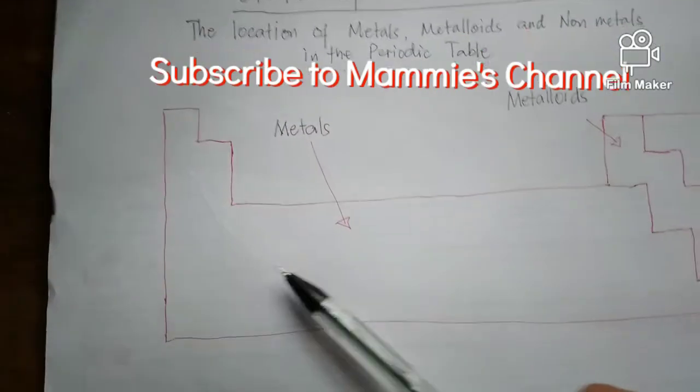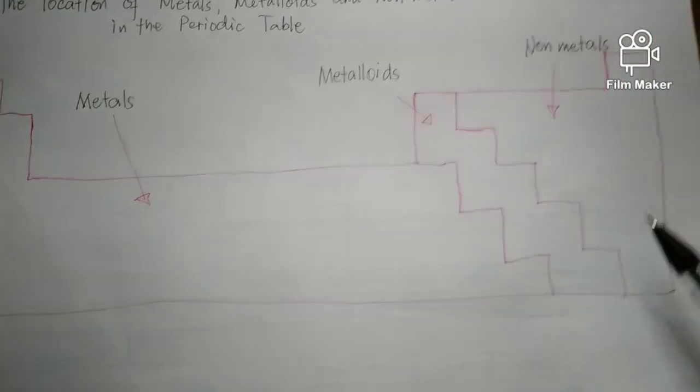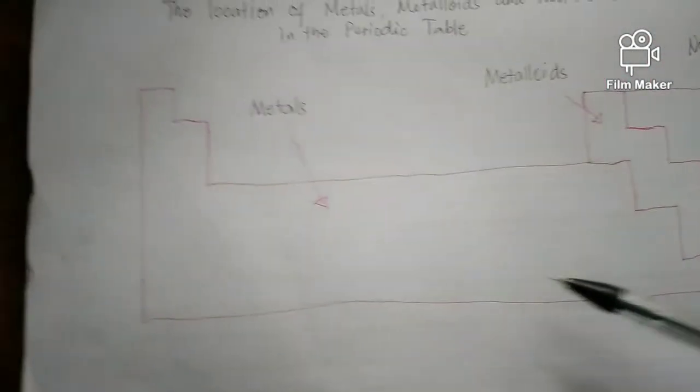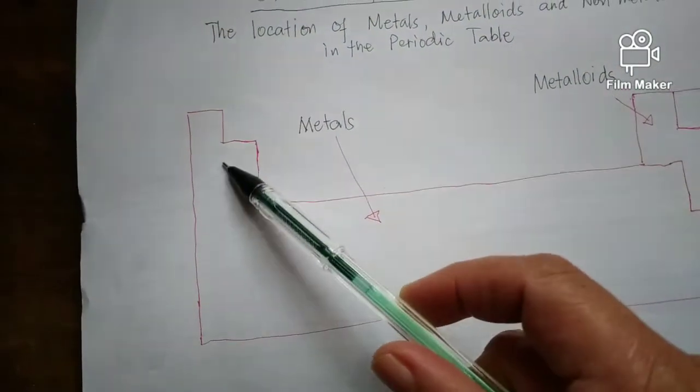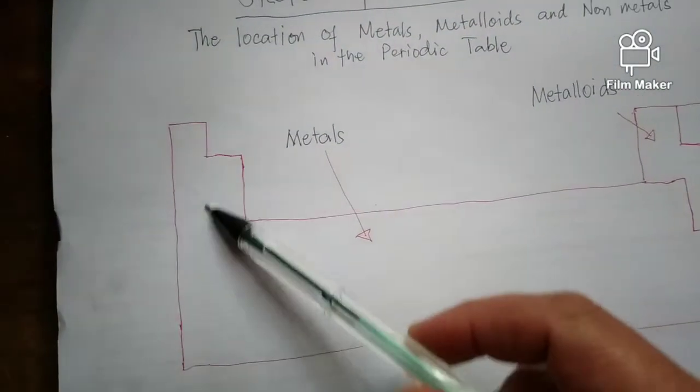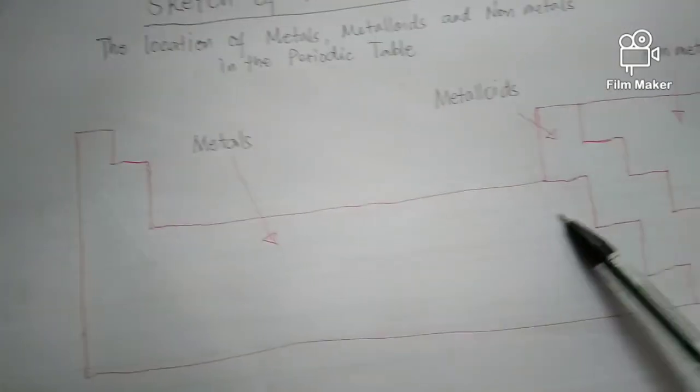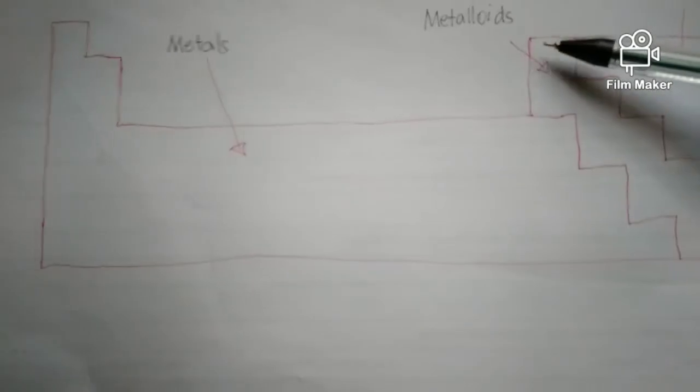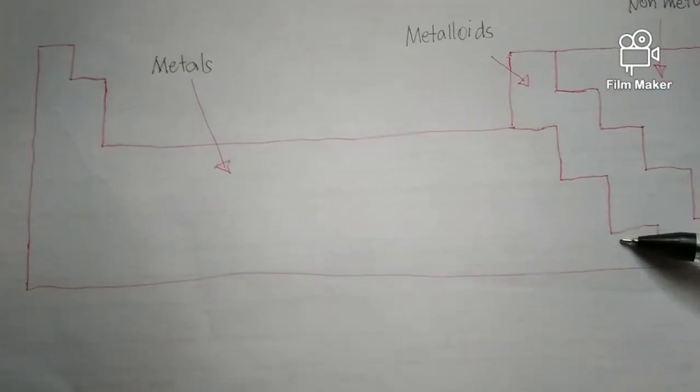So if this is the periodic table, you can refer to your periodic table and this is the sketch. So the elements that are written here, all the elements from left up to here, and you can see there is a ladder shape or a line forming a ladder at this point.